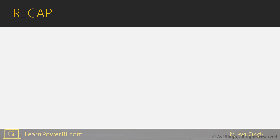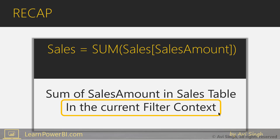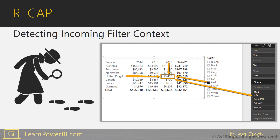A quick recap of content we have already covered in previous lessons. First of all, there's always this magical element in any measure — when it says Sales is a sum of Sales Amount, this part is always implied: it's in the current filter context. And then we also saw how we can be the detective and detect the incoming filter context, which can be affected from multiple sources.